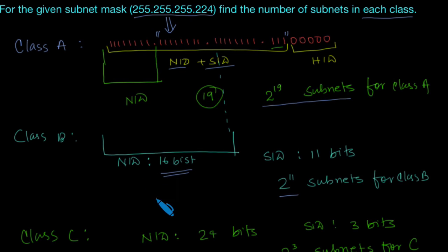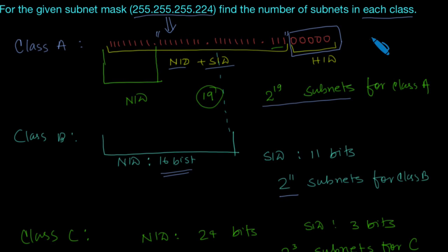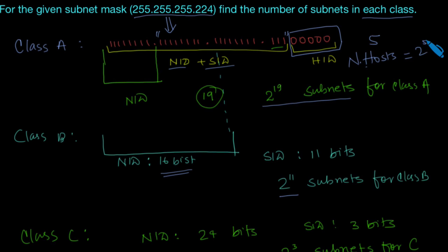One thing to notice: for all classes the host bits are fixed at 5, so the number of hosts is the same in all cases — 2 to the power 5 minus 2, because we don't use the first and last addresses. I hope you understand this. If you have any doubt, please ask in the doubt section. Thanks for watching.